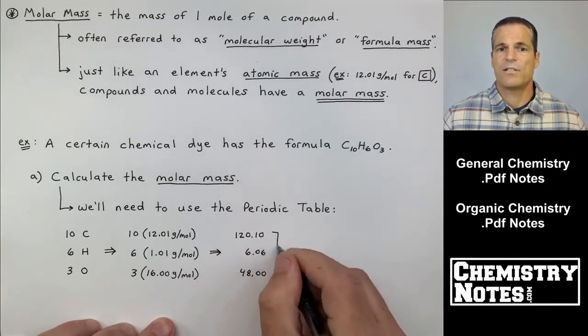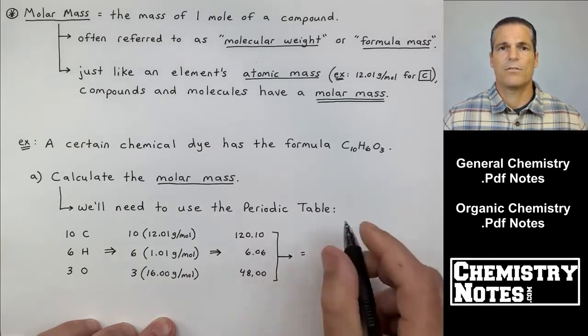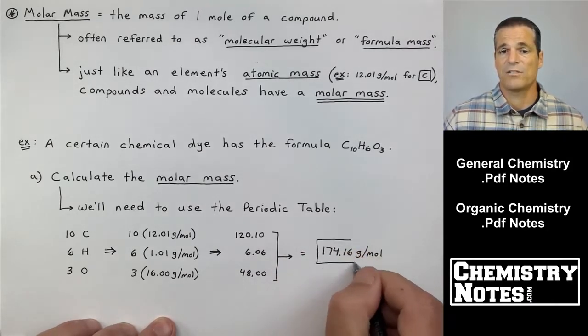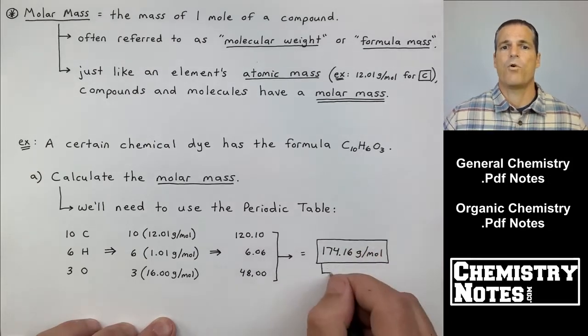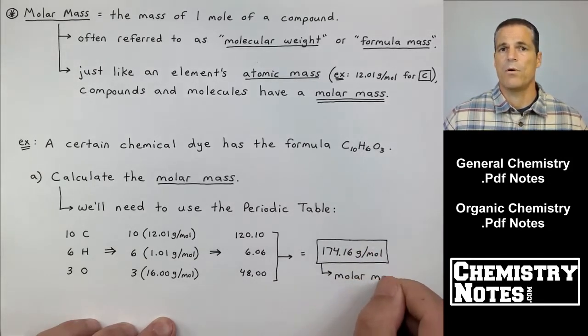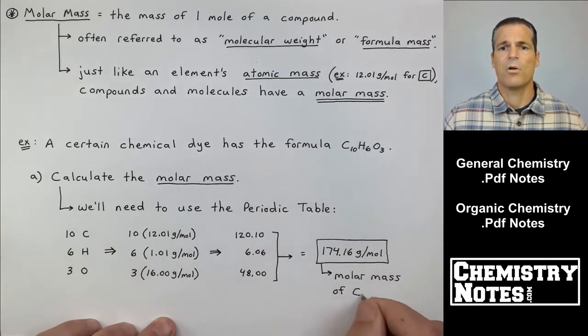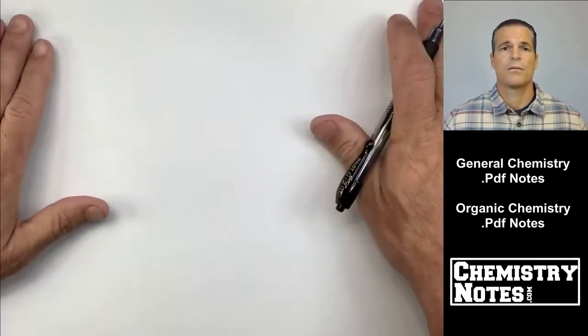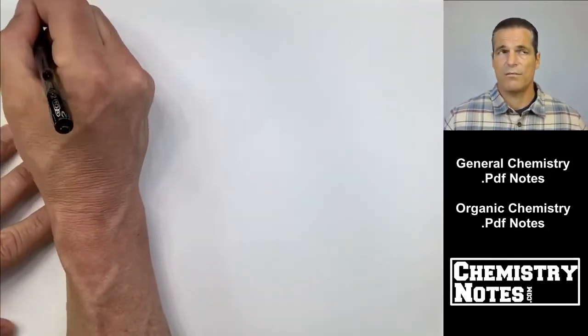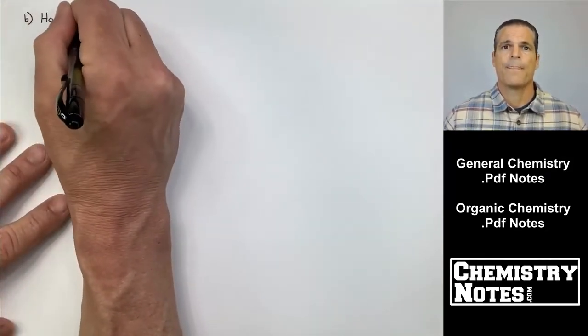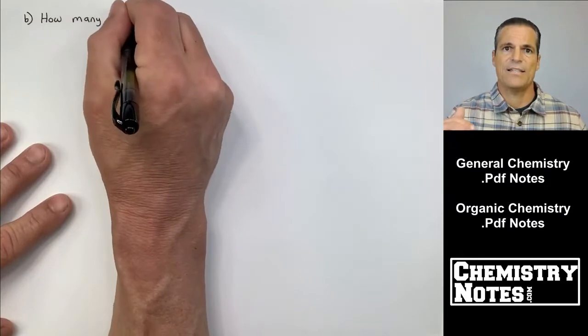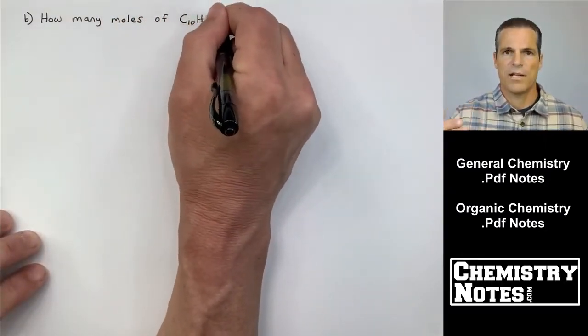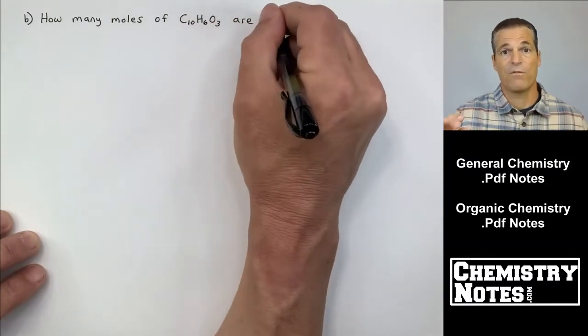Okay, if you add all these up, and I like to report my atomic masses and molar masses to the hundredths place, I just do 174.16 grams per mole. This is the molar mass or molecular weight of C10H6O3. All right, so that's kind of a, I don't want to say no-brainer, but if you know what atomic mass is, it should follow suit that getting the molar mass or the molecular weight is just a matter of being careful with your calculator.